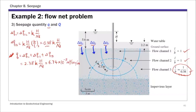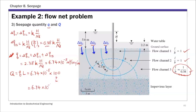Capital Q is small q times the total length of the structure, which is 100 meters. So Q equals 6.74 times 10 to the negative 5 times 100, giving a total flow quantity of 6.74 times 10 to the negative 3 cubic meters per second, or 582 cubic meters per day — the total flow quantity for the entire 100-meter-long structure.